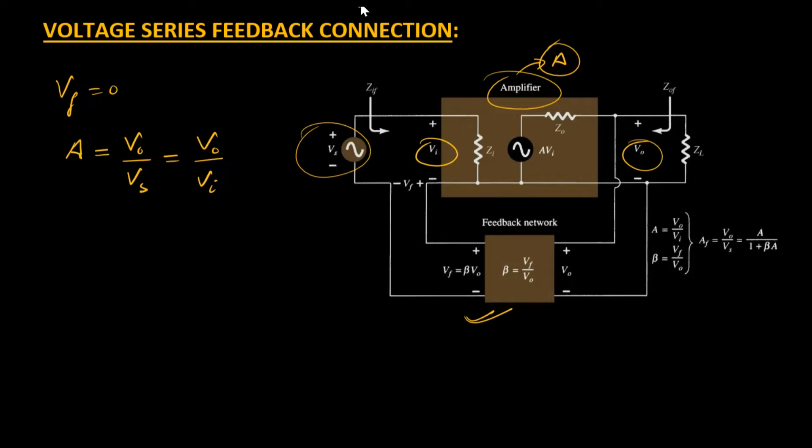Now consider when feedback circuitry is introduced - Vf is not zero. At that time, Vi becomes equal to Vs minus Vf. One voltage we're getting from Vs and one from the negative potential, meaning the polarity of both waves are in opposite directions, or 180 degrees out of phase. At the mixer we get Vi, which is the sum or subtraction of these two depending on the polarity of the wave.